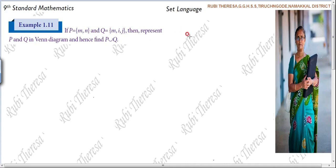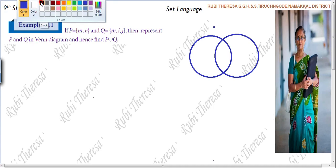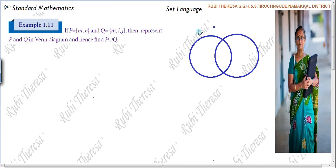M is the common element. So what is it? Overlapping set. These two are overlapping sets. So what you have to do? You have to write the common elements first. This is set P. This is set Q.